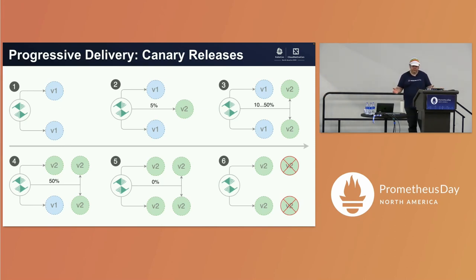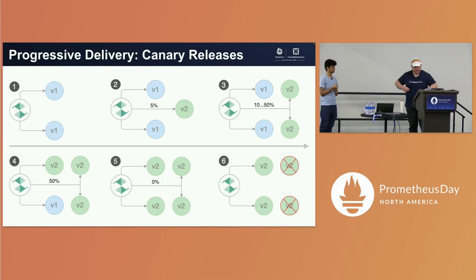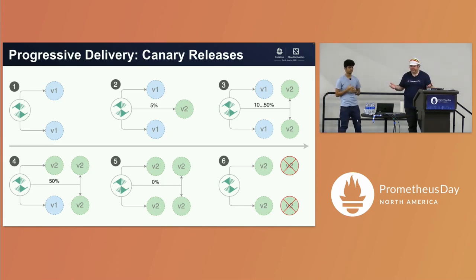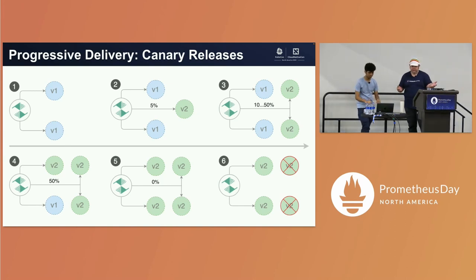I want to call attention to this diagram — there are six panels with version one and version two. What we're doing is an update: if you want to do the upgrade, this is progressive delivery. As you see in version one, we're going from version one to version two.